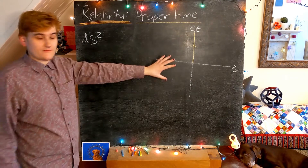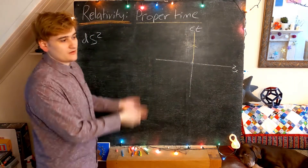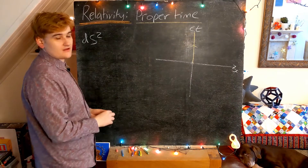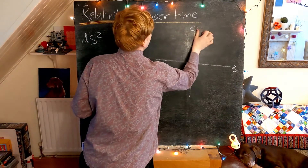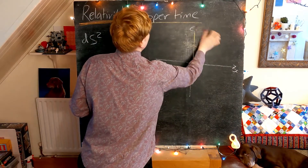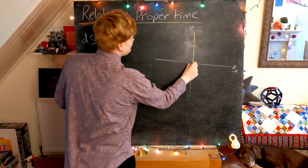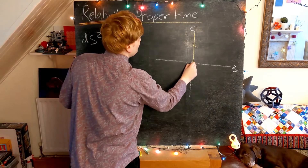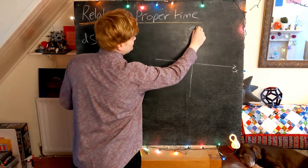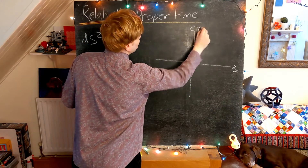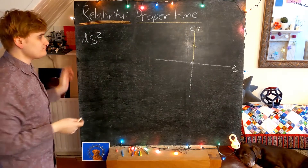In your own frame, the time which you measure we're going to start calling the proper time. So this is going to be the frame of our proper observer, and we can just call their coordinate time the proper time.